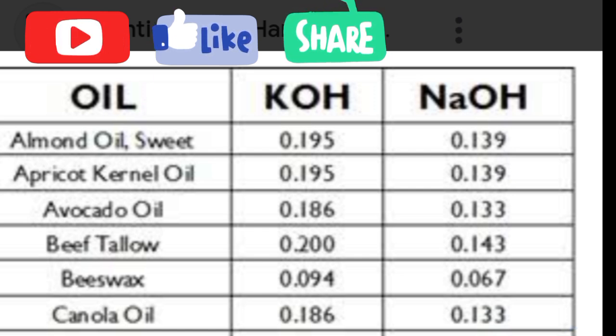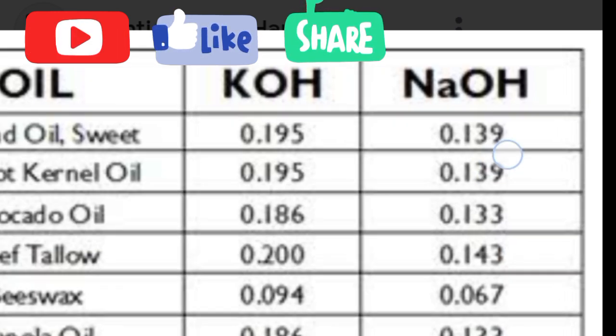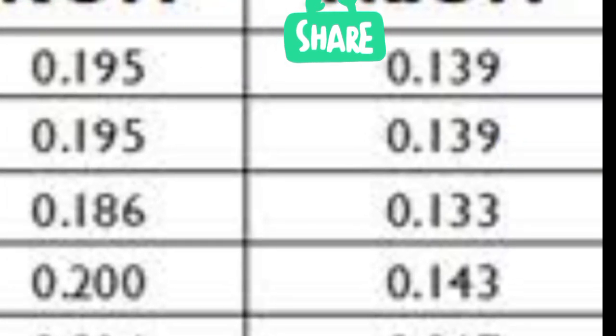That is for bar soap. For liquid soap I would need caustic potash (potassium hydroxide) to fully saponify beef tallow. Since I want to make a bar soap, I use the sodium hydroxide value: 0.143 × 1000 = 143 grams. We know that 1 kg = 1000 grams, so converting to grams I get 143 grams of caustic soda. I'll now use this value to calculate my recipe.